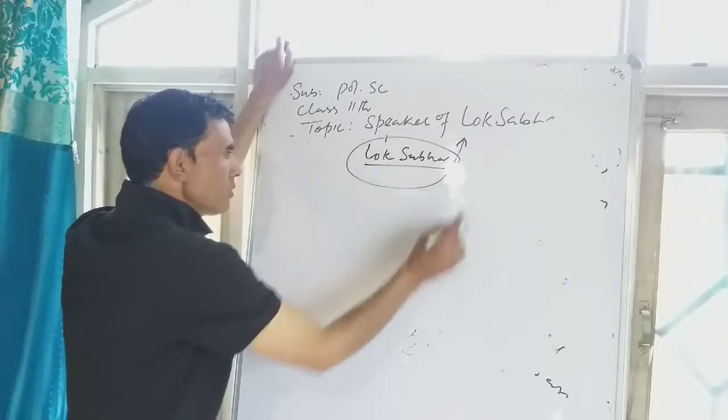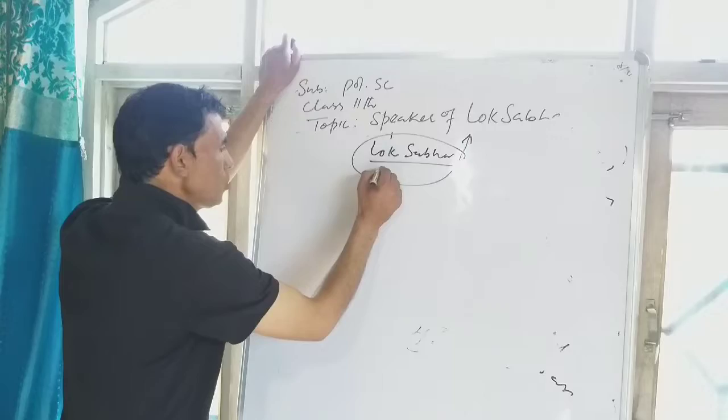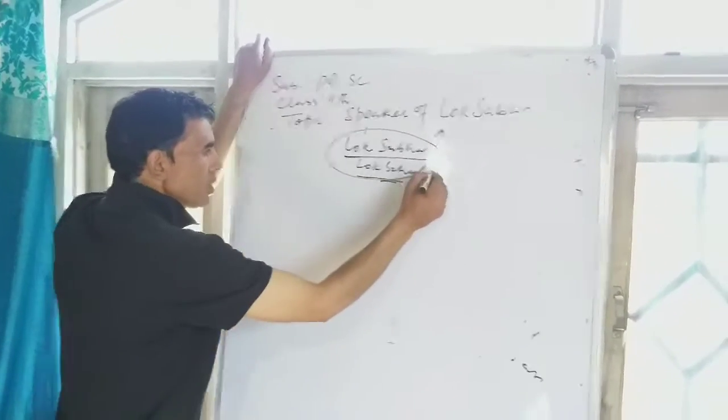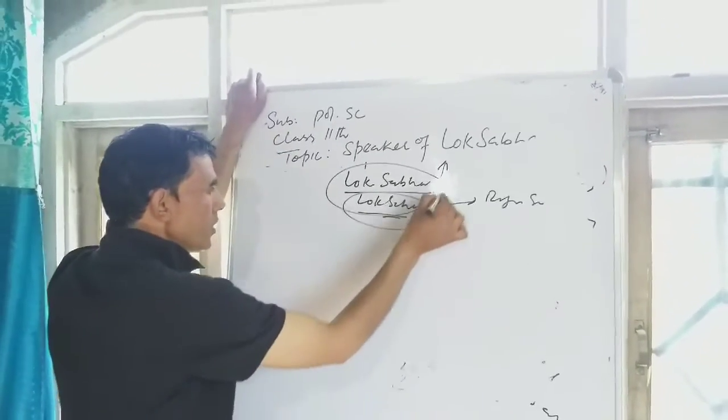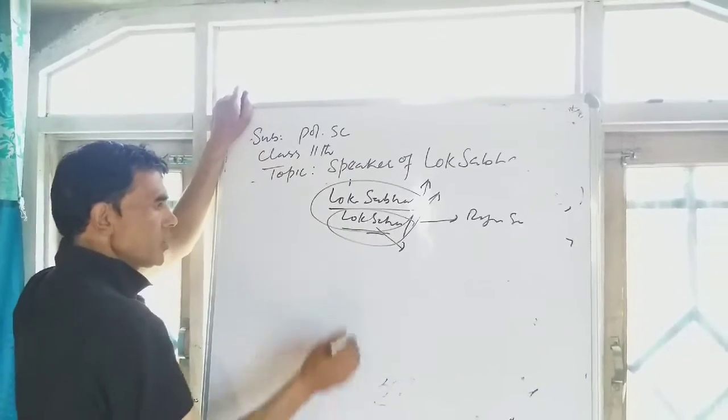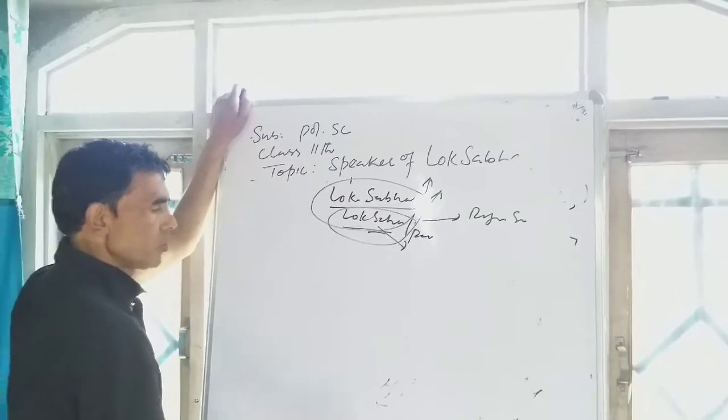Our parliament which is the highest law making body in the country has two houses or two chambers, one is called Lok Sabha and another called Rajya Sabha. Lok Sabha is a very powerful house, the lower house of the parliament. It is a powerful house because it is directly elected by the people.